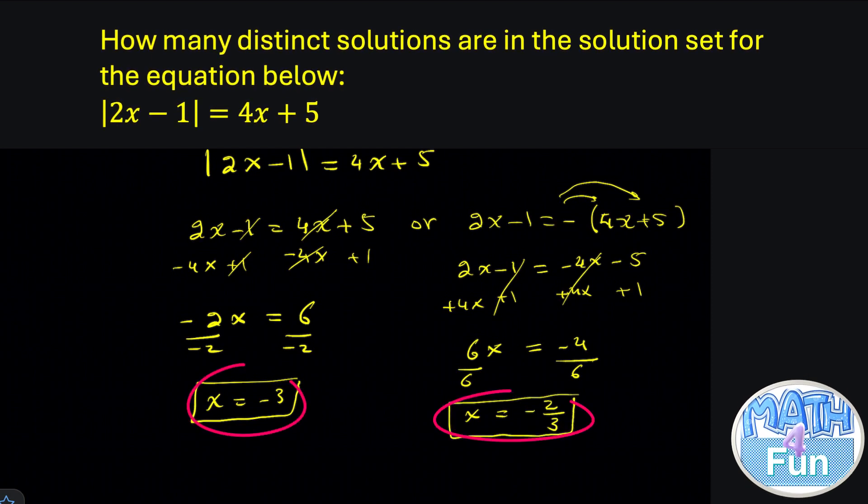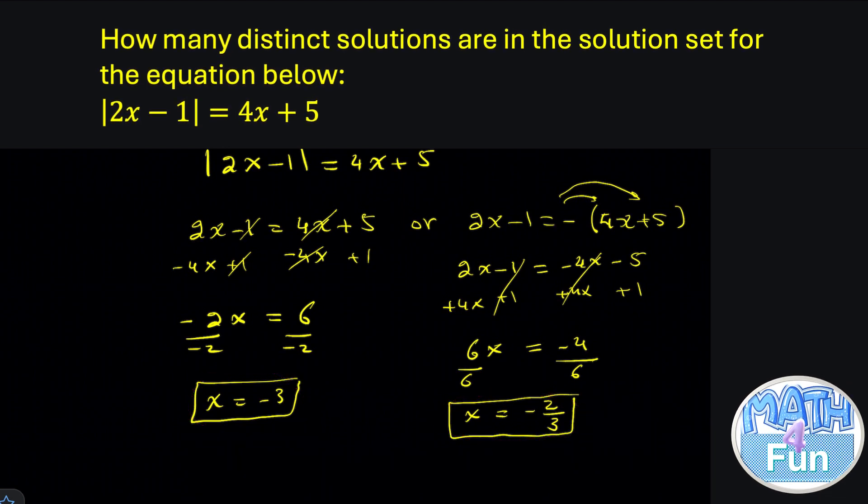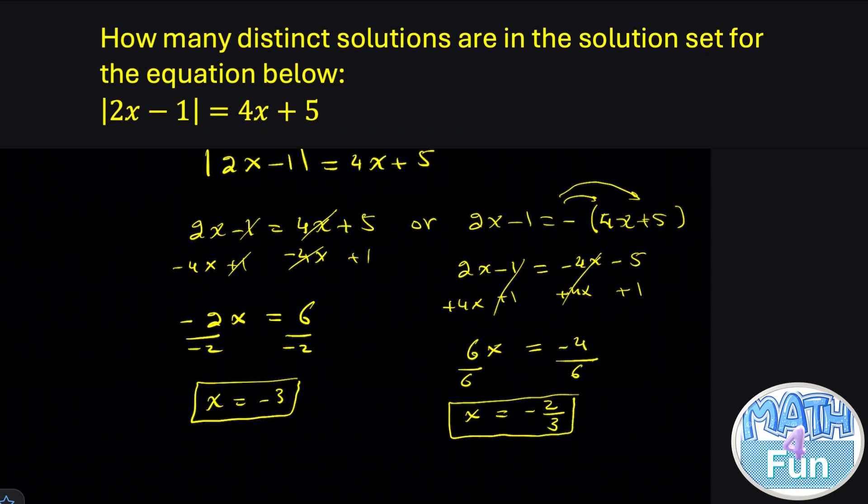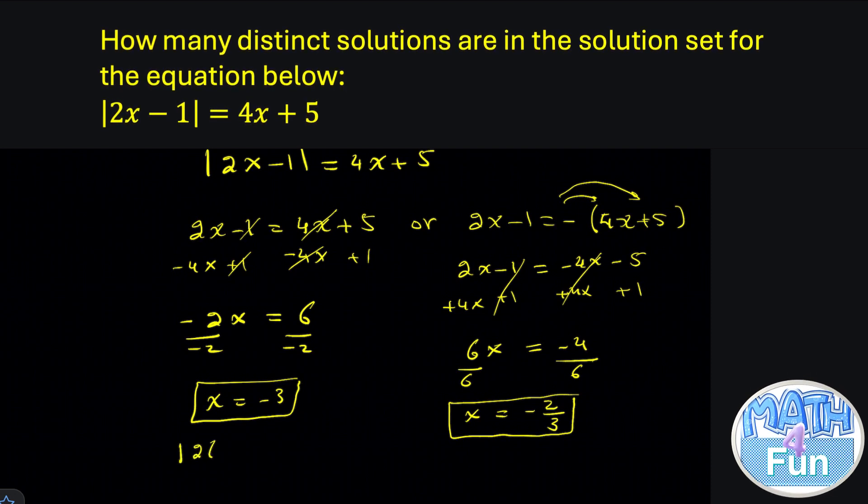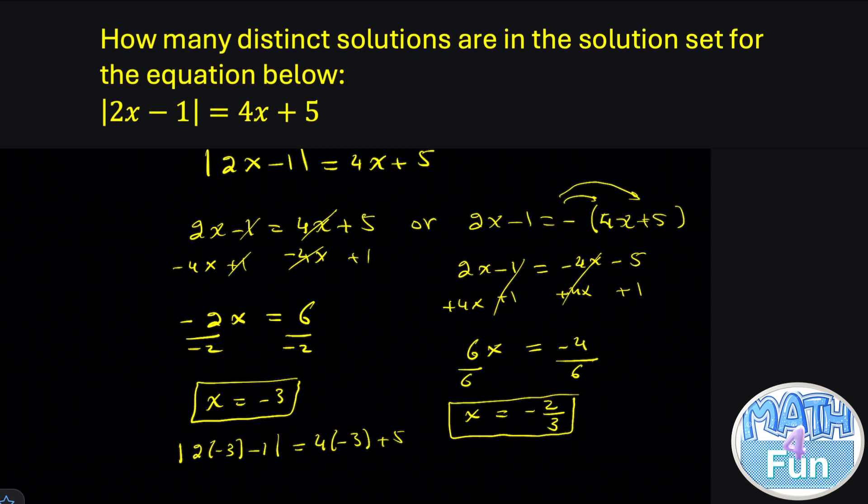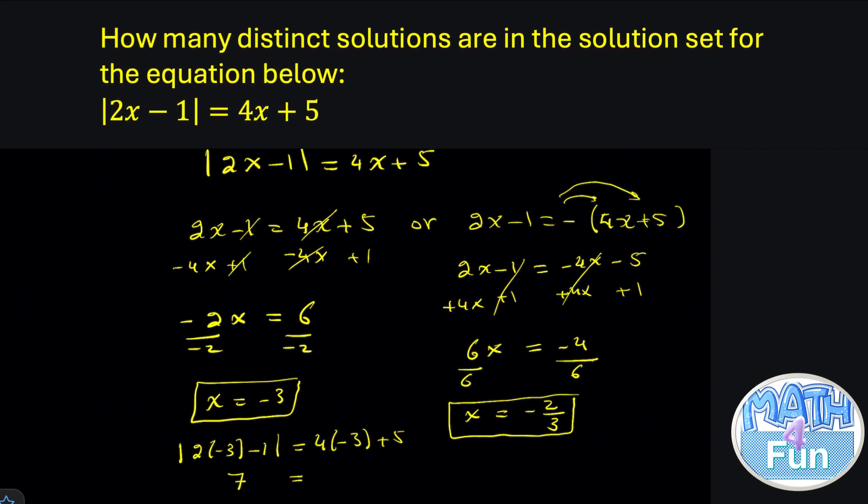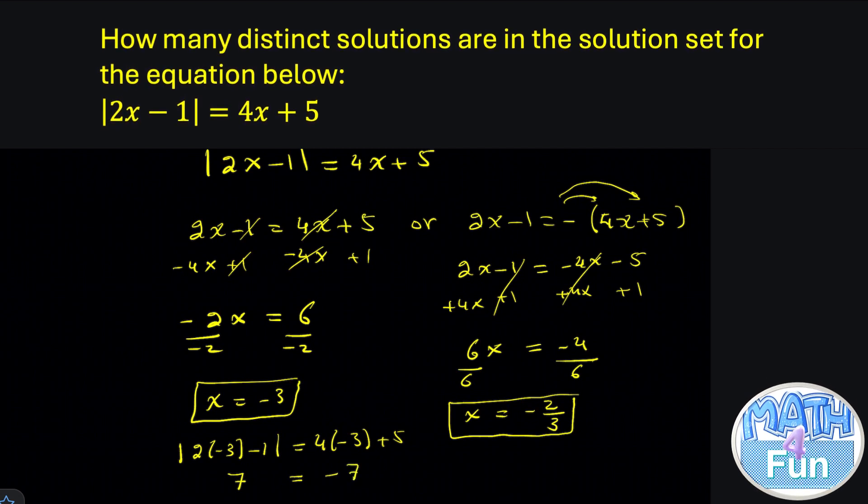Now generally speaking we got two answers here. But we don't know if they are two solutions or not. Unless we replace them in the main equation here. So let's try absolute 2 multiplied by negative 3 minus 1 is equal to 4 multiplied by negative 3 plus 5. 2 times minus 3 minus 6 minus 1 minus 7. Absolute minus 7 is 7 is equal 4 times minus 3 which is minus 12 plus 5 which is minus 7. 7 equal to minus 7 is impossible. So x equal to minus 3 is not a solution. So we say rejected solution.